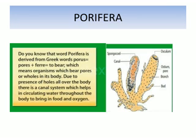Do you know the word Porifera? It is taken from a Latin/Greek origin — 'pori' means pores or holes, and 'ferre' means to bear. So organisms which bear pores or holes on their body are known as Porifera. In simple terms, pore-bearing animals are known as Porifera. About 5000 species of Porifera are found around the world.